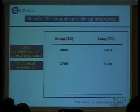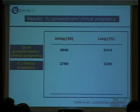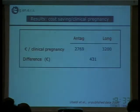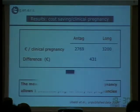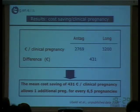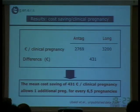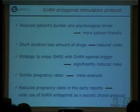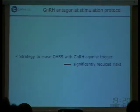The amount of money spent on medication was significantly lower in the antagonist protocol. This difference was 431 euros per pregnancy, meaning that the mean cost saving per clinical pregnancy allows one additional pregnancy every 6.5 pregnancies.